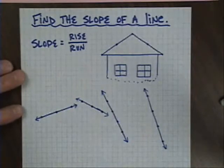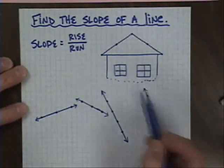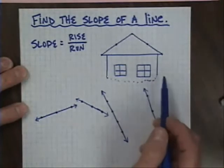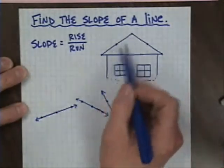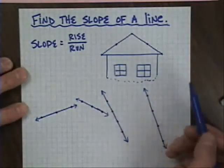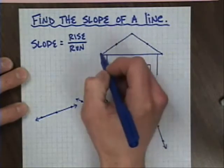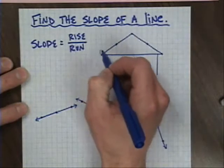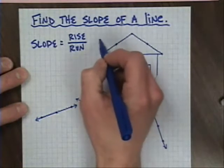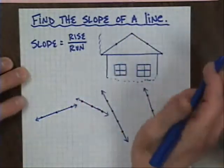This first video in the series deals with finding the slope of a line. I have a silly little picture here of a house. I show this because the roof line of a house is a great example of slope. It has rise from the base of the roof up to the point. There's a certain amount of rise that you need. In this case, we have a rise of four units.